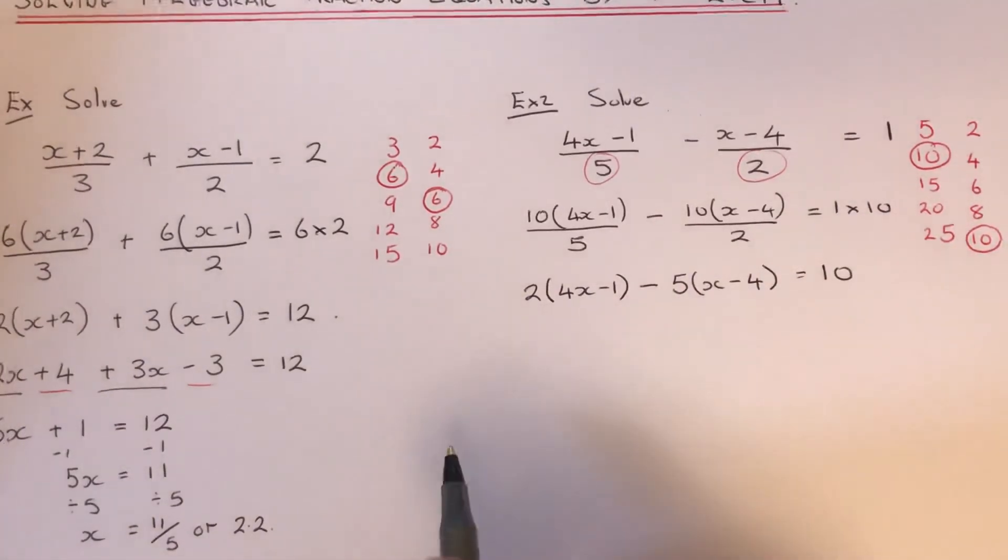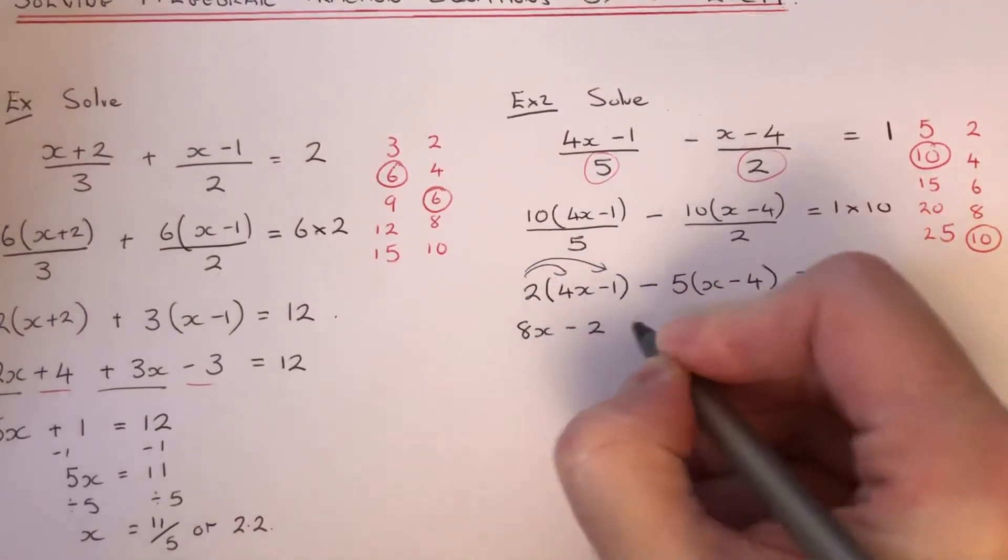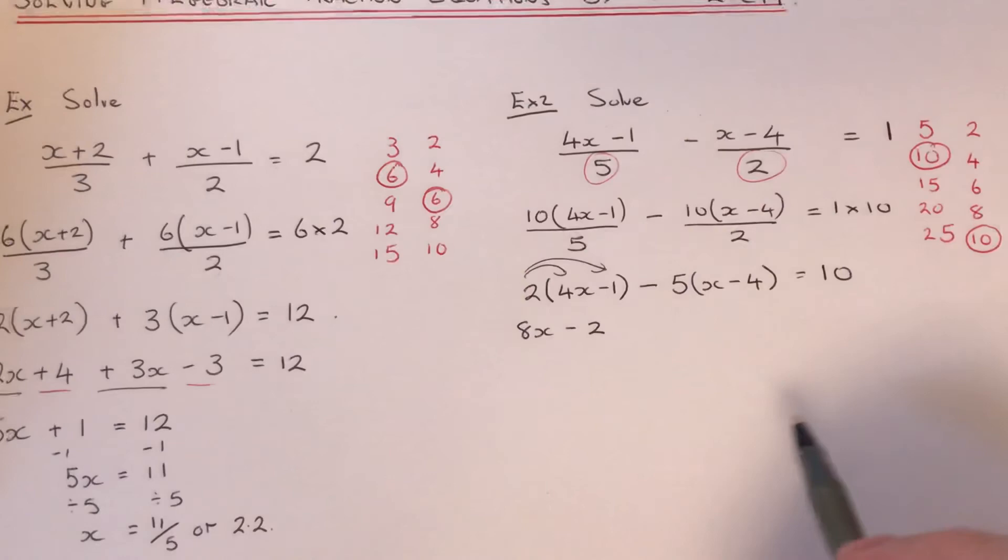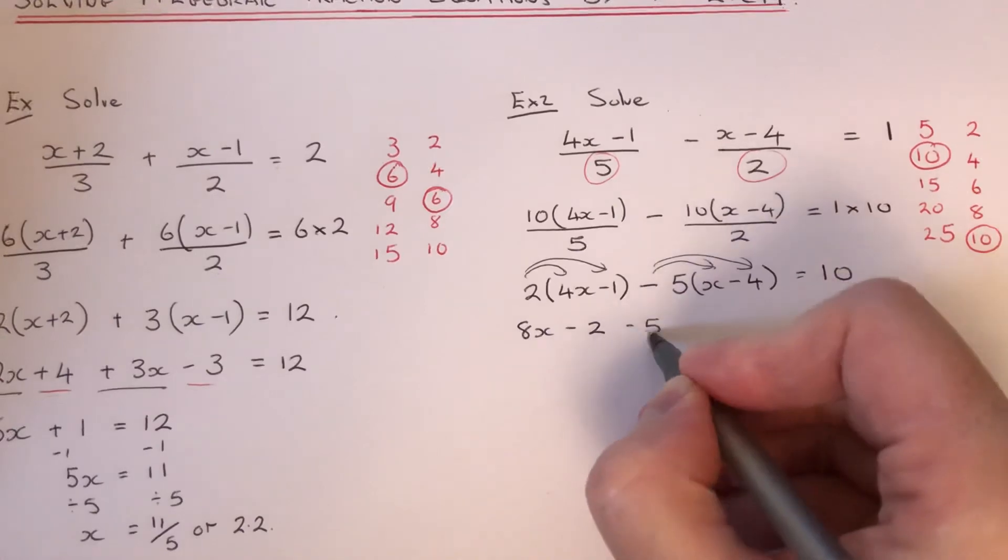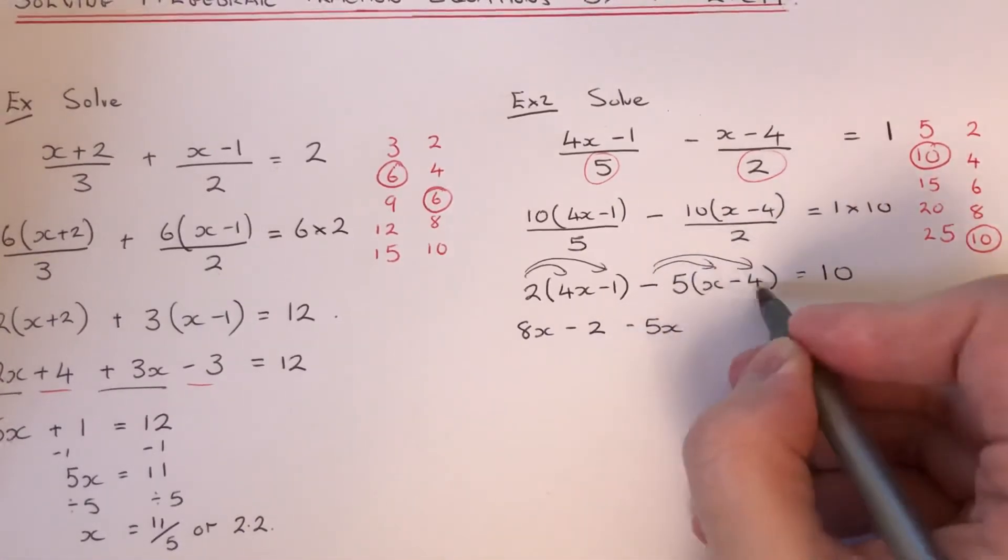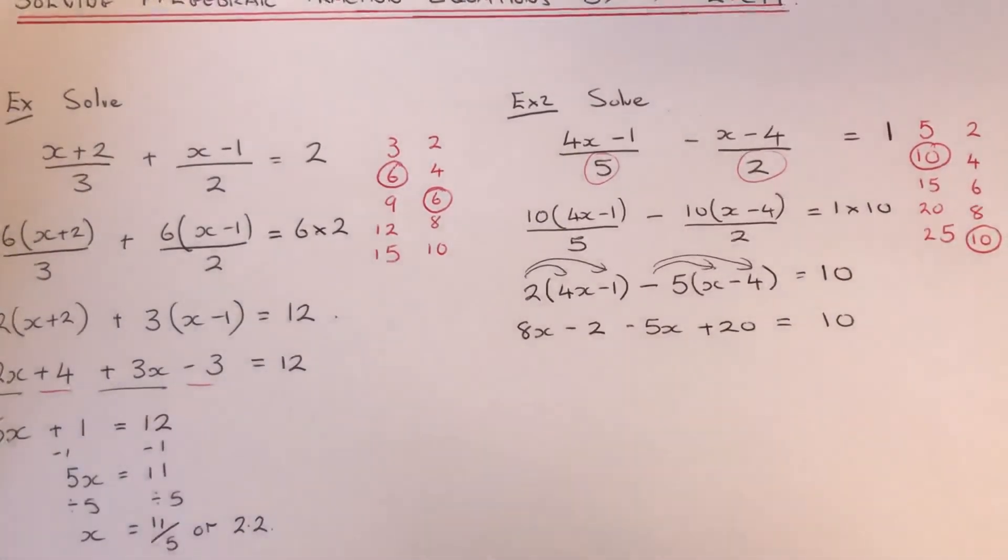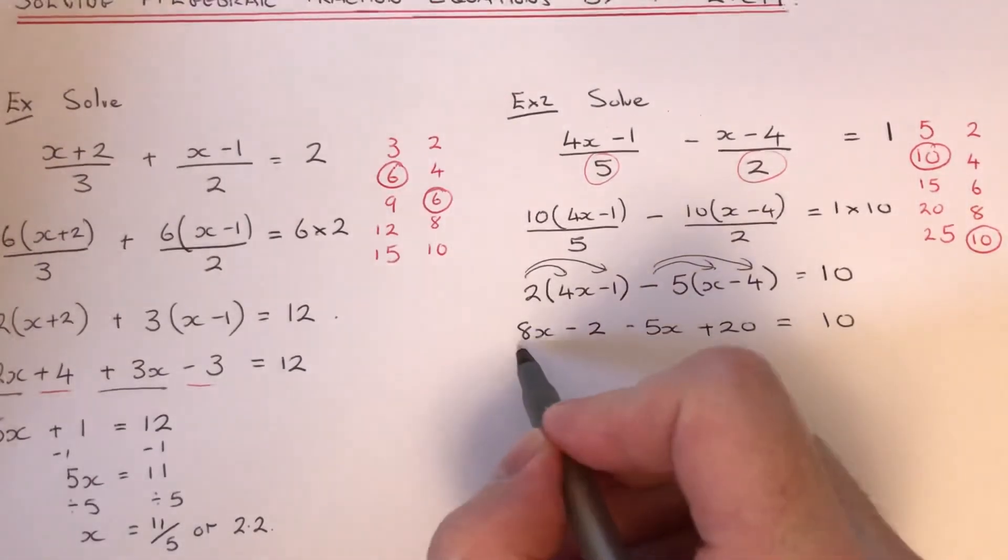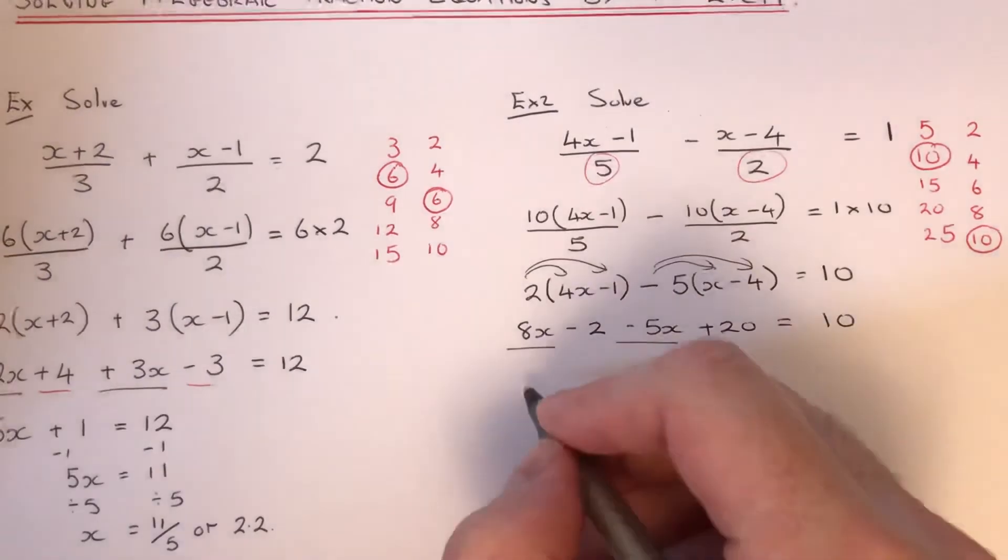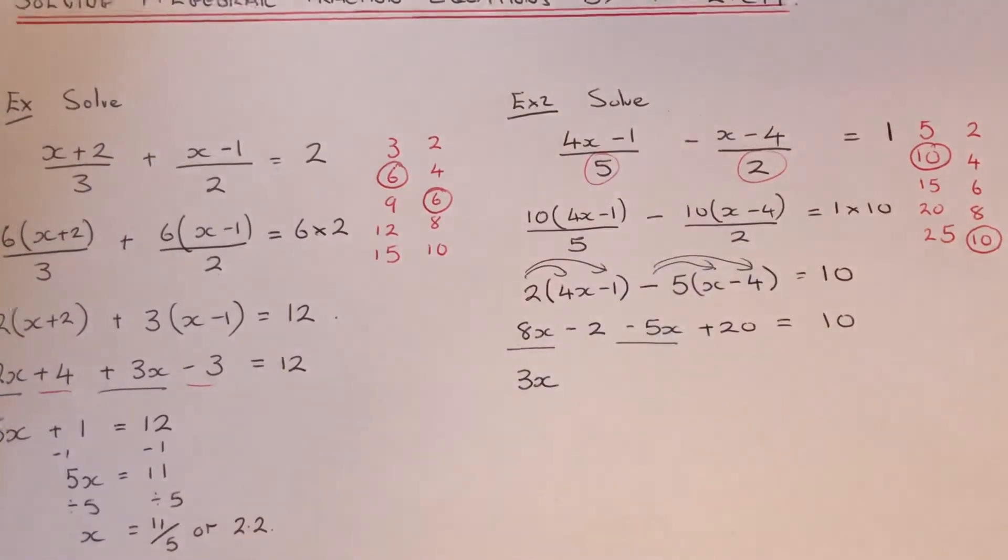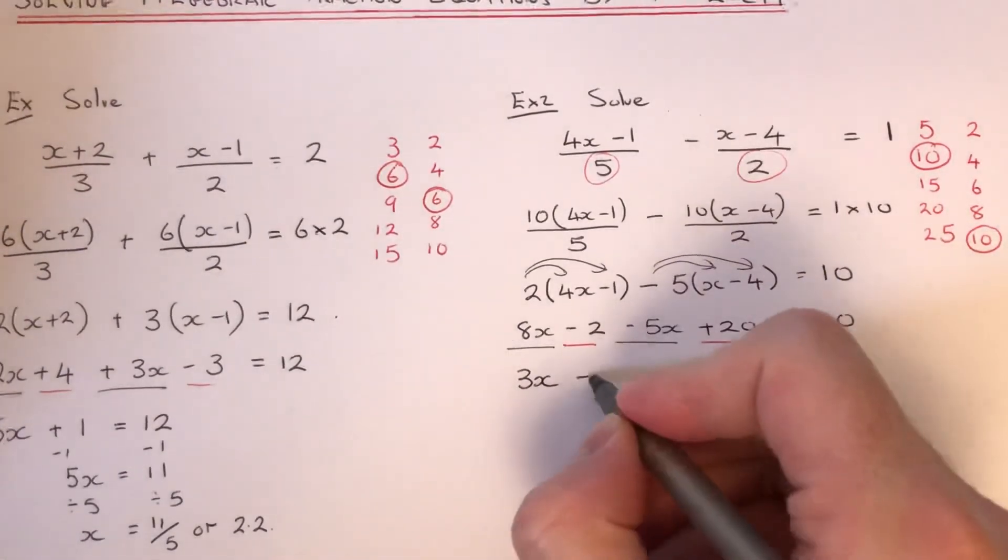We can now just multiply out our brackets. If we multiply out the first one, we get 8x minus 2. Be careful with the second one because you've got a minus 5 in front of it. Minus 5 times x is minus 5x. Minus 5 times minus 4 is plus 20. If we simplify this equation, we can combine the x's. 8x take away 5x is 3x. Minus 2 plus 20 is 18.